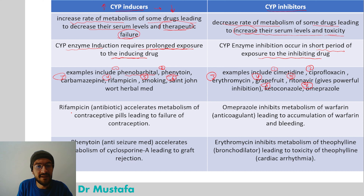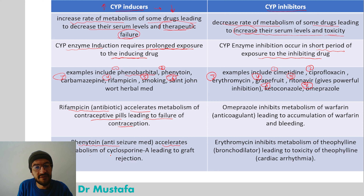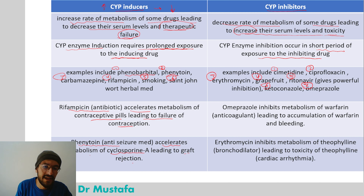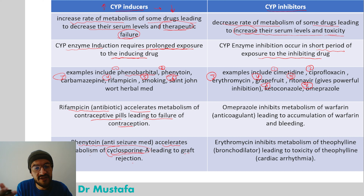A clinical example of a CYP inducer: rifampicin (an antibiotic) accelerates the metabolism of contraceptive pills, leading to failure of contraception. Another example: phenytoin (an anti-seizure drug) is also a CYP inducer that accelerates metabolism of cyclosporine A, leading to graft rejection in transplant patients who happen to take phenytoin concurrently.